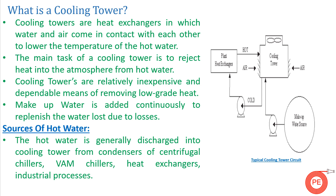Before starting, I want to ask a simple question: what is a cooling tower? Cooling towers are basically heat exchangers in which water and air come in contact with each other to lower the temperature of hot water. It is part of a process industry or HVAC industry where hot water has to be cooled because it is again circulated in the system. The main task of the cooling tower is to reject heat into the atmosphere from hot water.